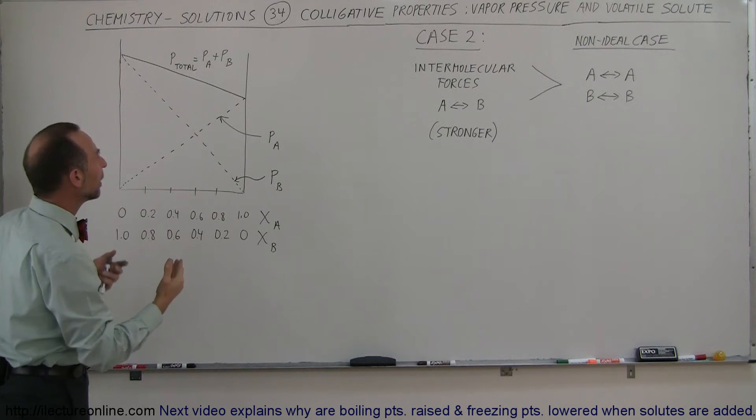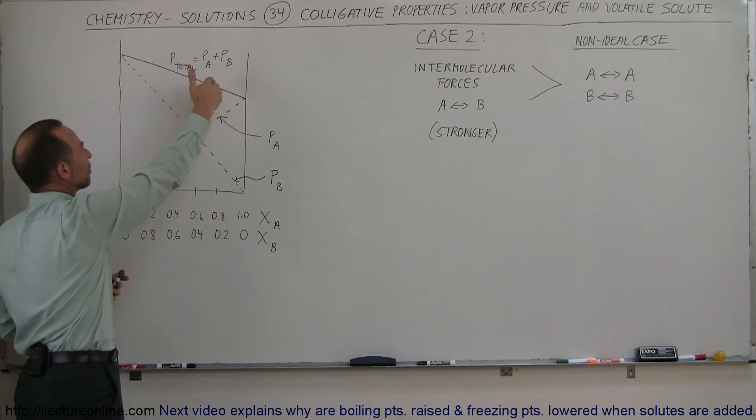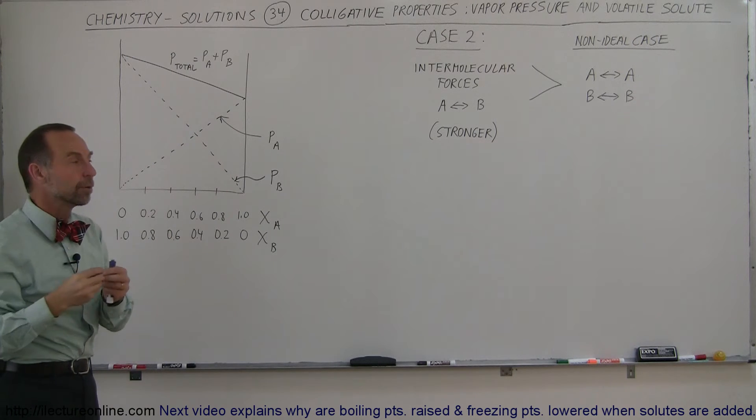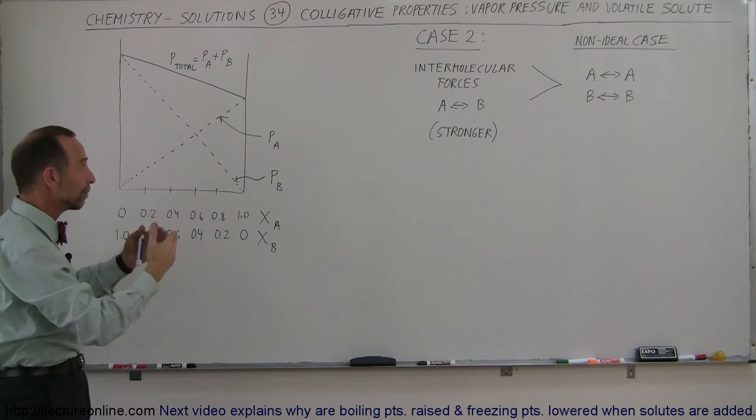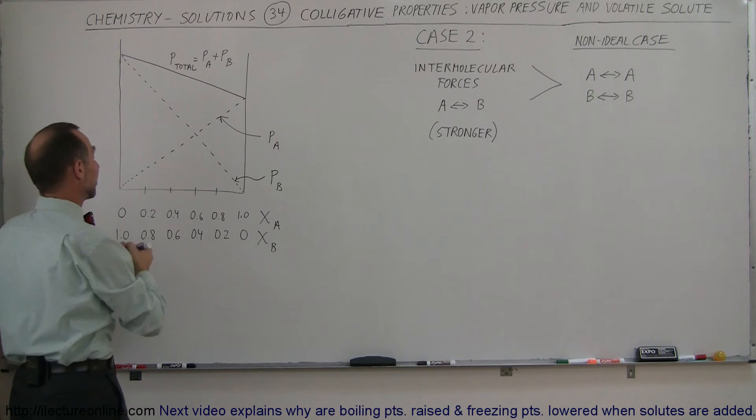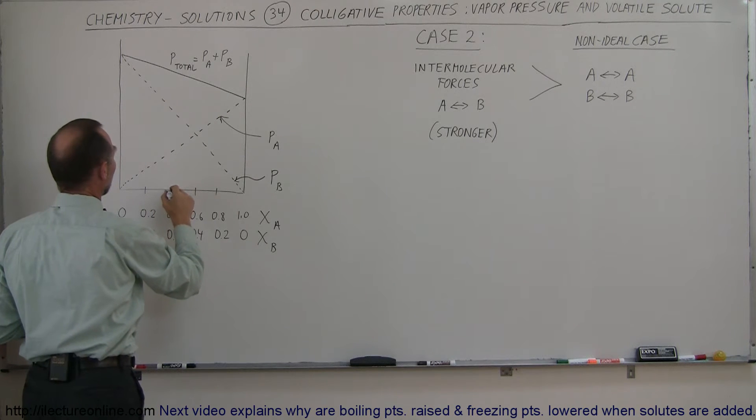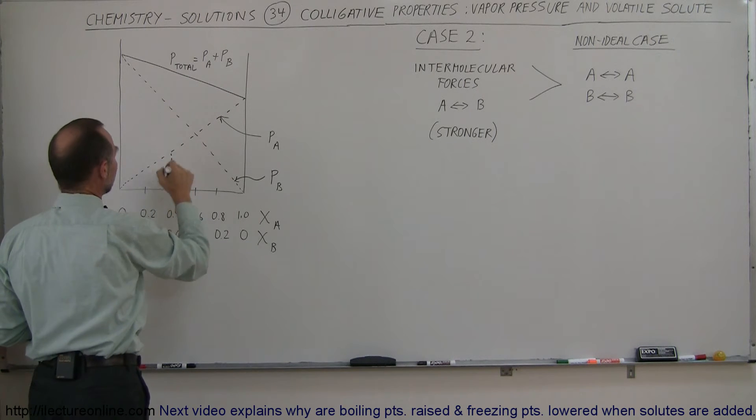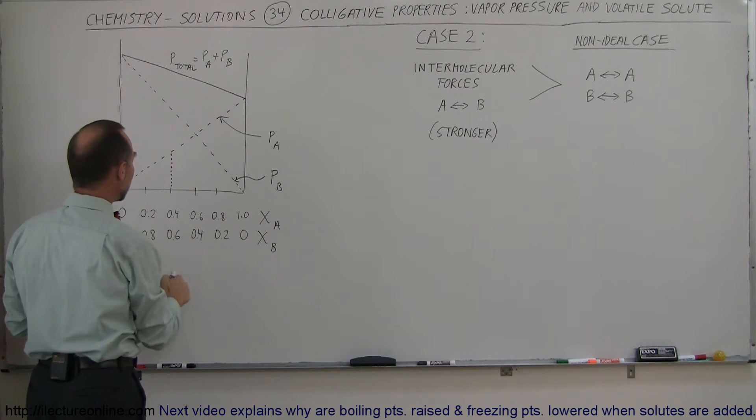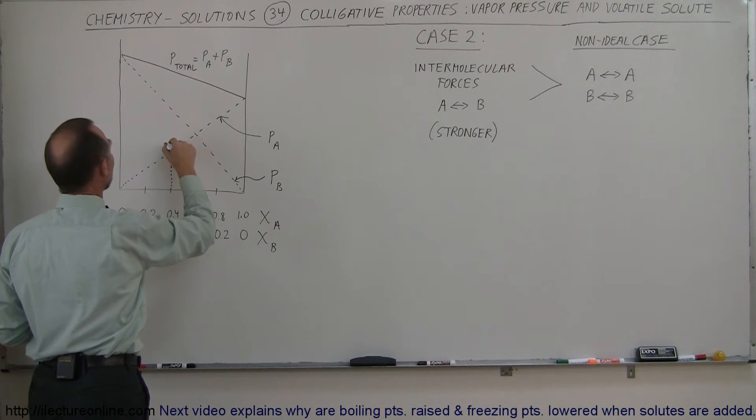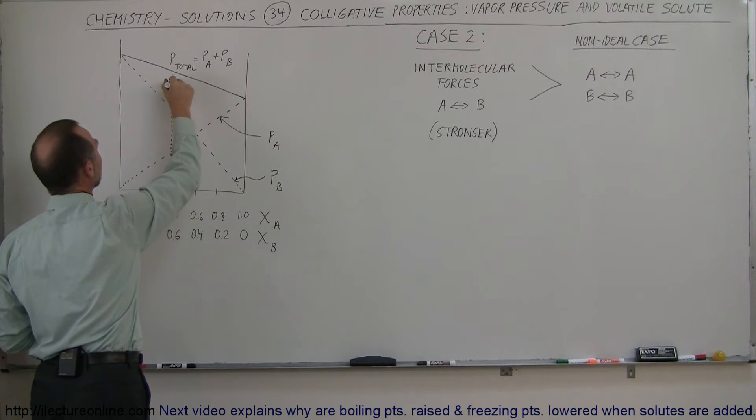So in an ideal case, the total vapor pressure is simply the sum of the two vapor pressures of the individual components by themselves. So when you put them together in an ideal case, you can simply say, for example, when there is forty percent of the solution is component A and sixty percent of solution is component B, and you draw a straight line across right here.